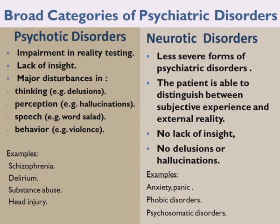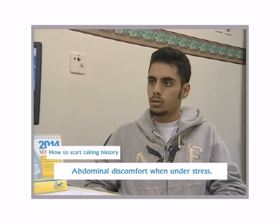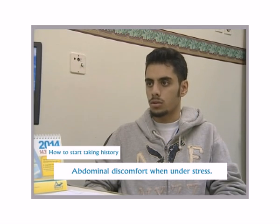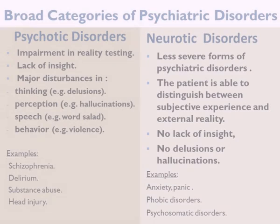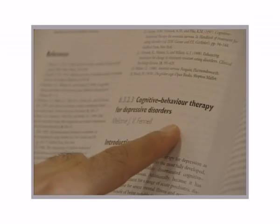On the other hand, compared to psychosis, the other category is called neurosis. These disorders are a less severe form of psychiatric disorders. The patient is able to distinguish between subjective experience and external reality — meaning no impairment in reality testing, no lack of insight, and no delusions or hallucinations. Examples of neurotic disorders include anxiety, panic disorders, chronic disorders, psychosomatic disorders, and so on.